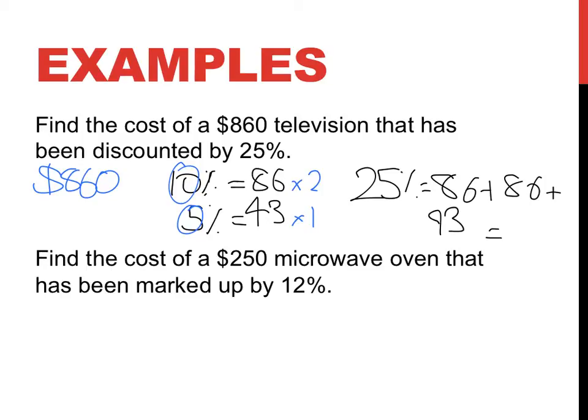86, 86 and 43 equals $215. So it's been discounted and it started off at $860 and it's been discounted by $215. So